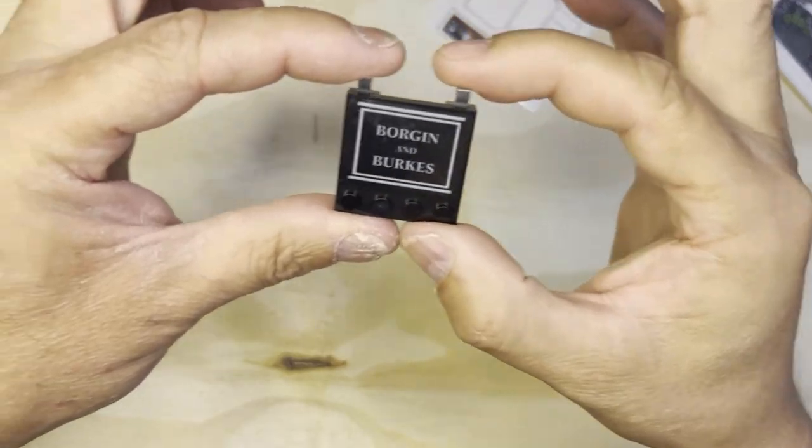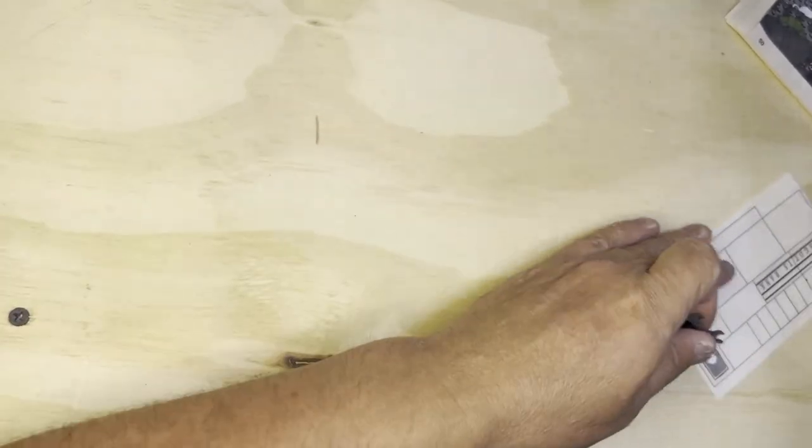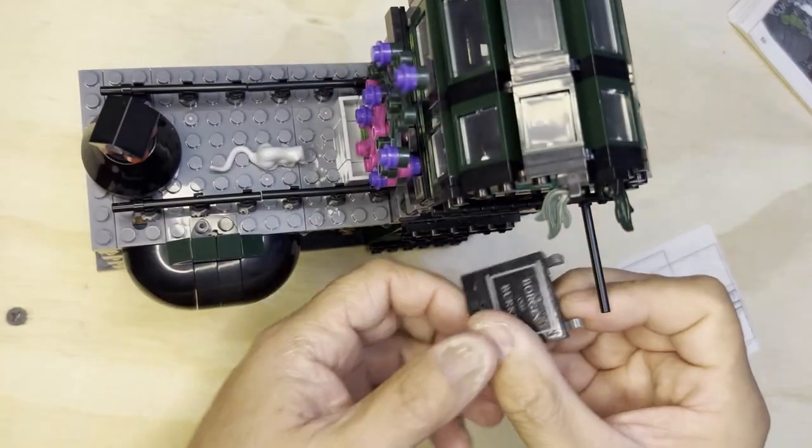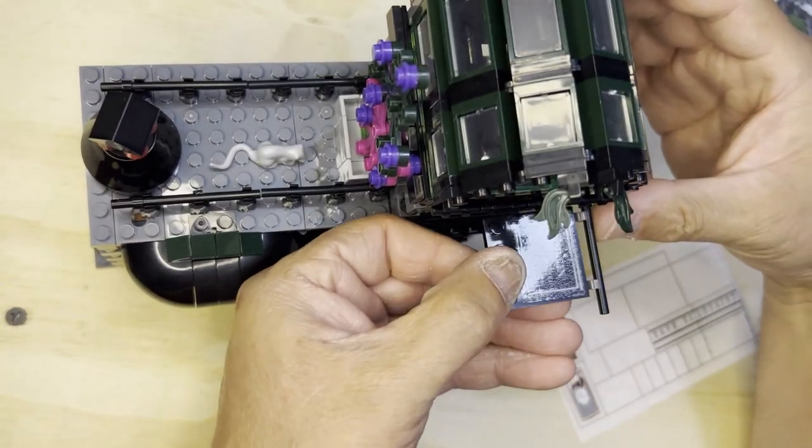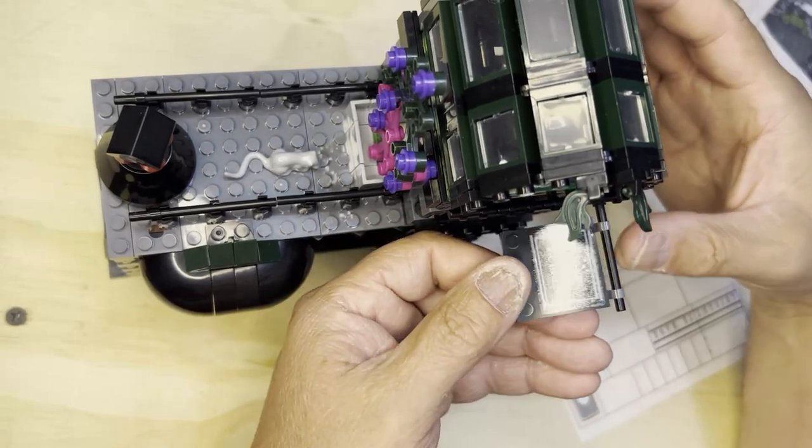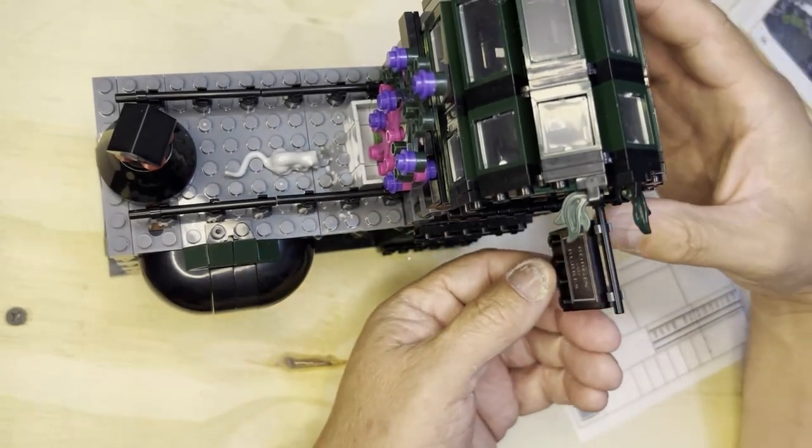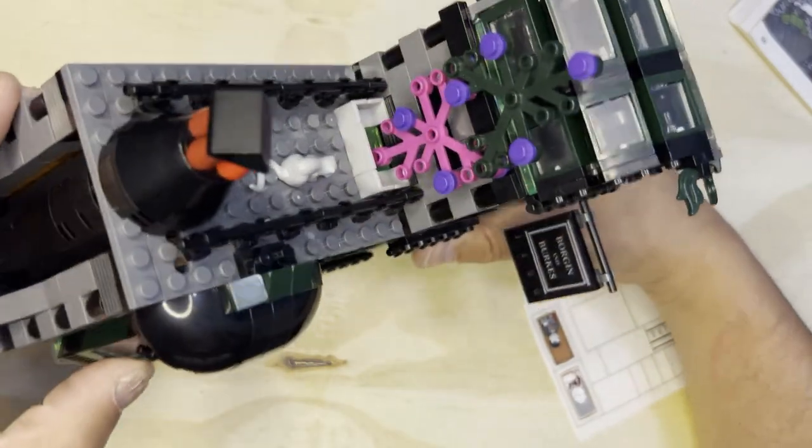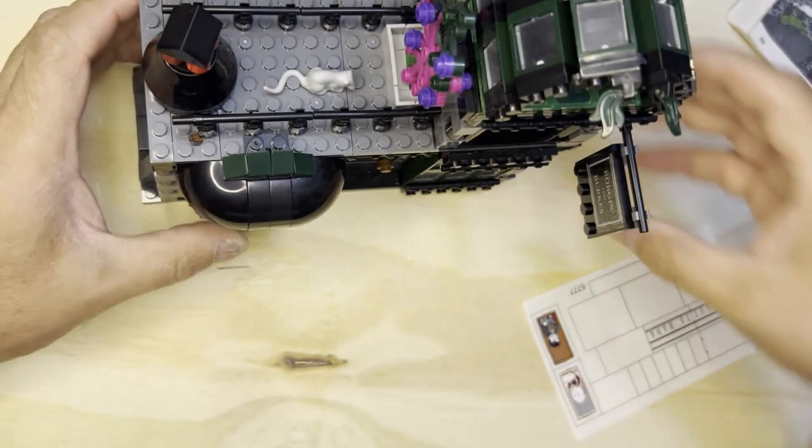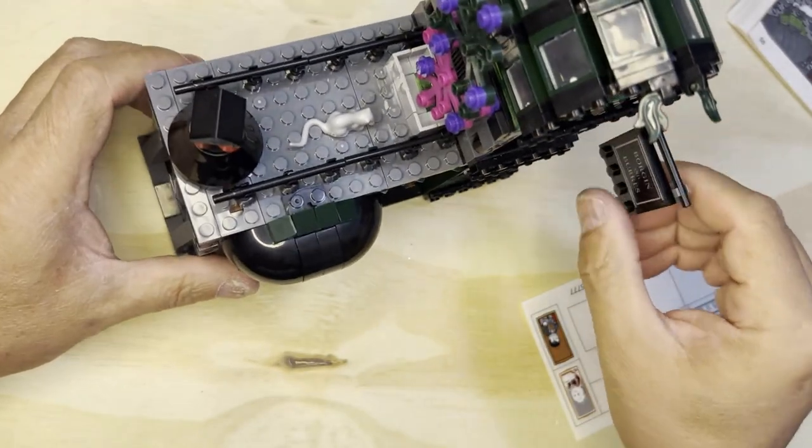We have built Bergen and Borks. And this will go right on here like this. Then I just put it down and look at that, folks. We've got a sign for Borgens and Borks. That's cool.